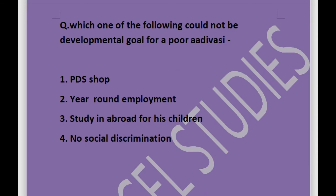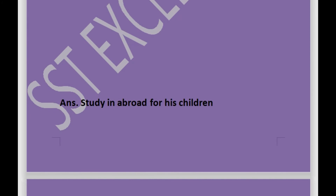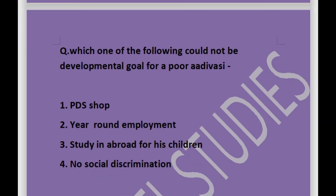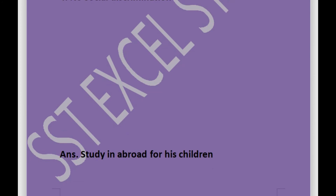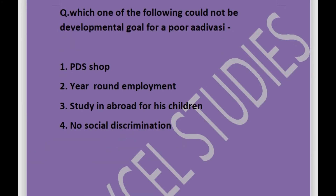Next question: which one of the following could not be a developmental goal for a poor Adivasi? Options are PDS shops, year-round employment, study abroad for his children, or no social discrimination. Answer is study abroad for his children. A poor Adivasi cannot think of sending his children abroad. PDS stands for public distribution system, and all the other options are basic requirements and developmental goals for a poor Adivasi.